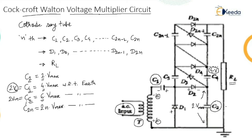The rectifiers D1, D3, D(2n-1) shown in the figure operate and conduct during the positive half cycle. During the positive half cycle, this particular side is positive and the other side is negative.